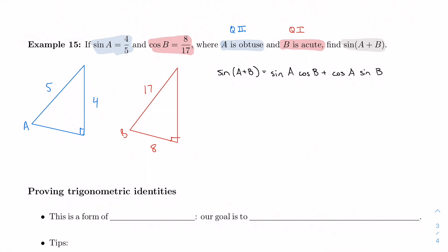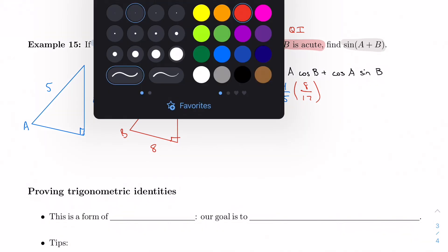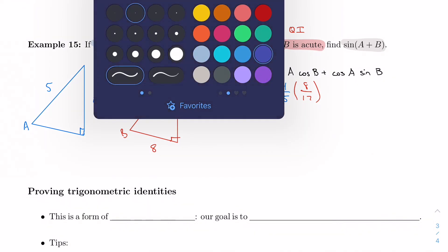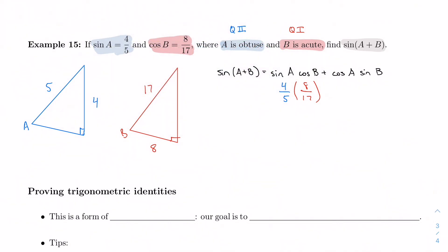So sine of A, we know sine of A. Sine of A is 4/5. And we know cosine B. Cosine B is 8 over 17. What we don't know is cosine A, and what we don't know is sine of B. But we have enough information to figure that out. We know we have a right triangle, and I can use the Pythagorean theorem.